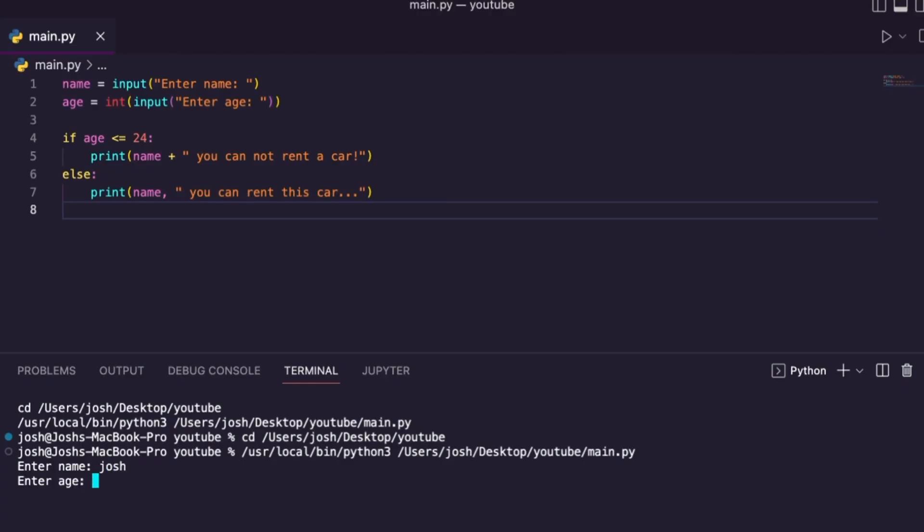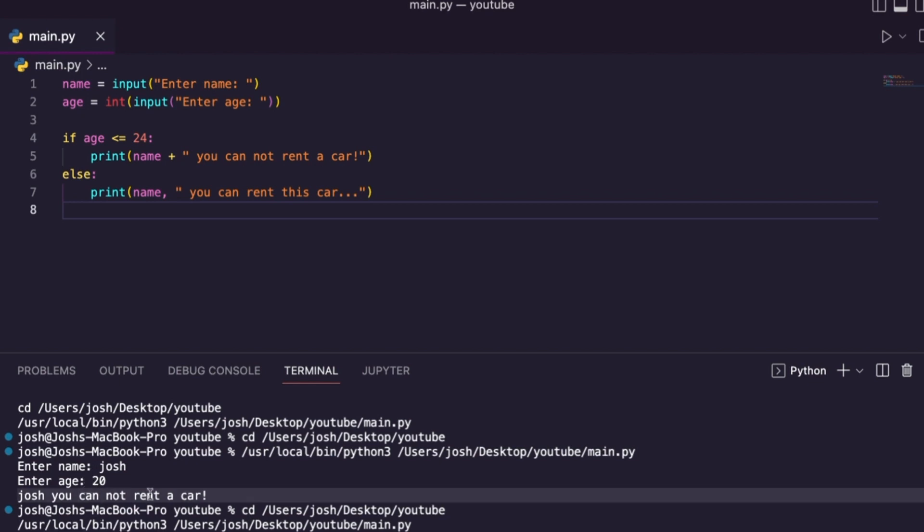When I run this, I'll do it two times. In here, I'll say Josh. I will say age. Let's say 20. Josh, you cannot rent a car. Let me run it again. Let's enter an actual age. Let's say Josh. Let's say 26. Josh, you can rent this car. You see my condition changed based on the input that I entered.